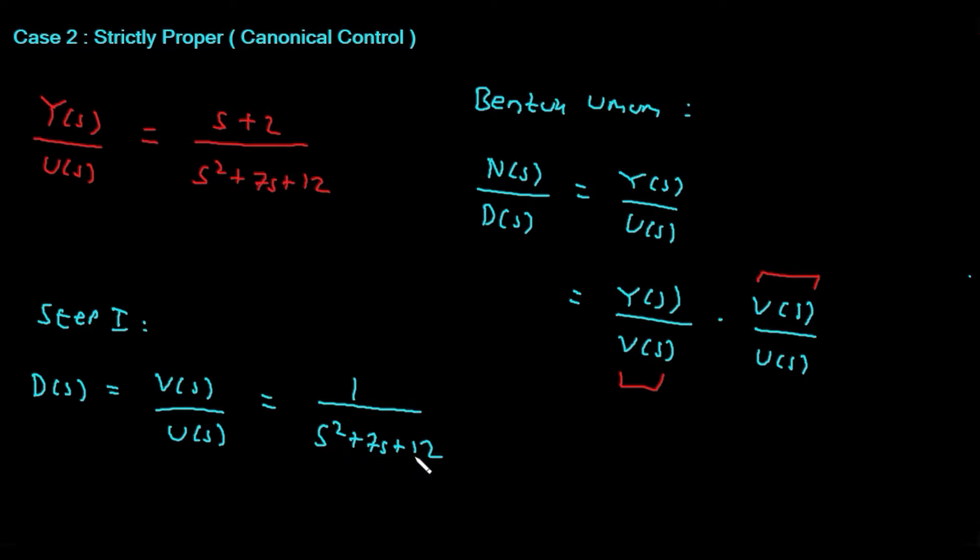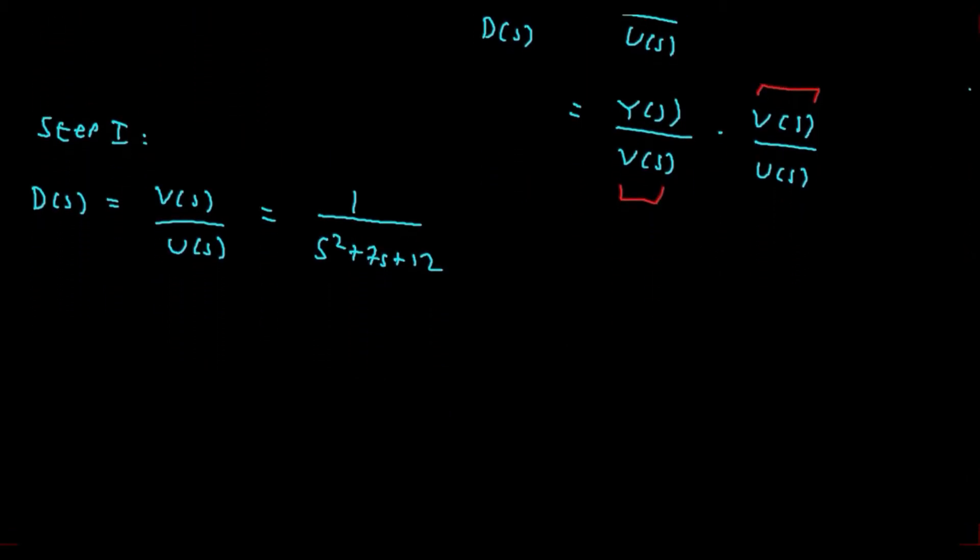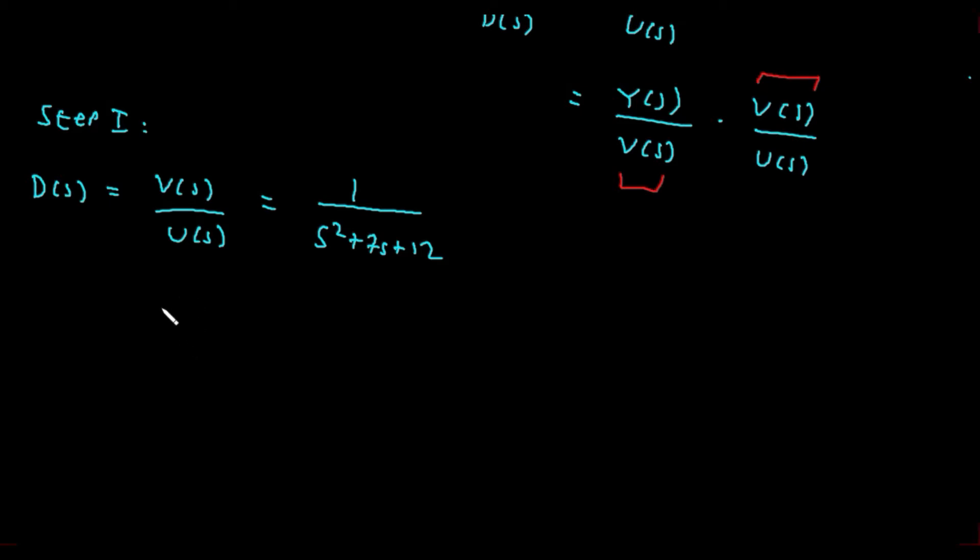If you look at the form, this is the problem we worked on yesterday: 1/(s²+7s+12). If you don't want the trouble of deriving it again, just write the A and B variables directly. If you haven't checked the previous video, check it first to understand the process. Here I'll write it directly. The A matrix from converting this transfer function to state space is A = [-7, -12; 1, 0], and B = [1; 0].